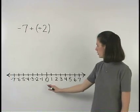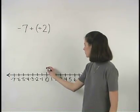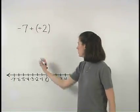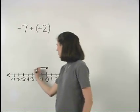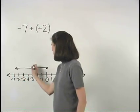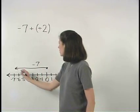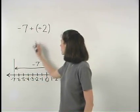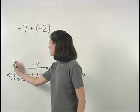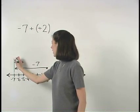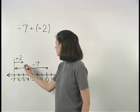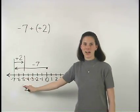So starting at 0 on our number line, negative 7 moves us 7 units to the left. Then from there, positive 2 moves us 2 units back to the right and we end up at negative 5.